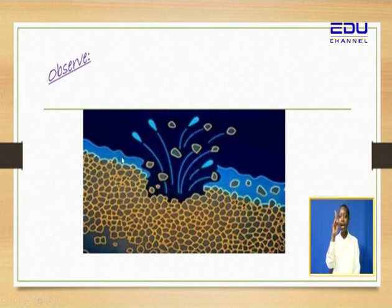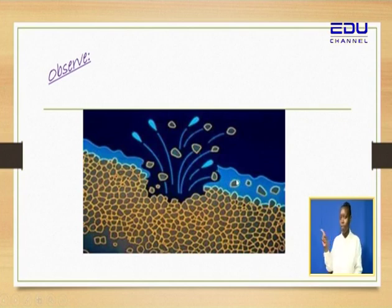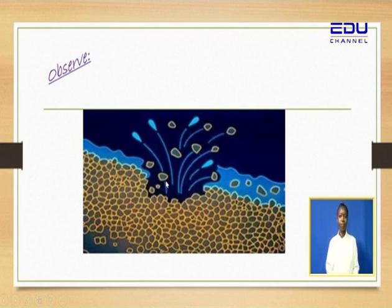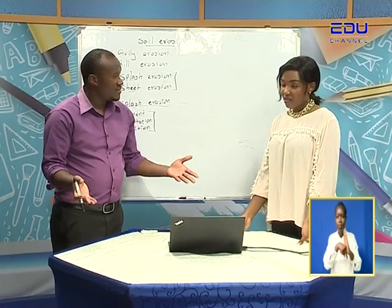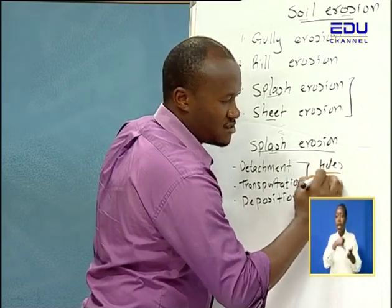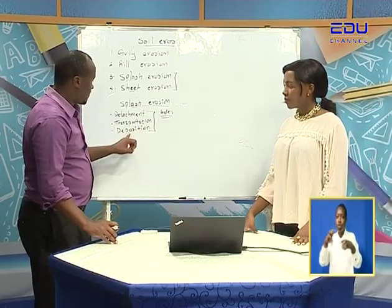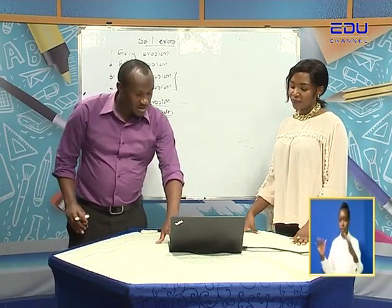Up here there are no particles on the water, but they are down here because the water is flowing downwards. Once these three things happen — the detachment, the transportation, the deposition — what remains is a hole. A simple hole. And when it continues, it gets deeper, it becomes a pothole. So when you talk about splash erosion, it involves the leaving of holes — small holes formed because of the detachment, transportation, and deposition of soil.